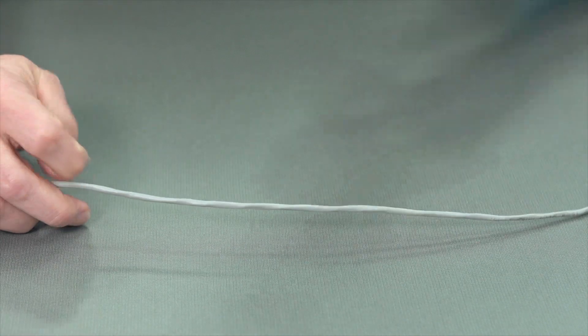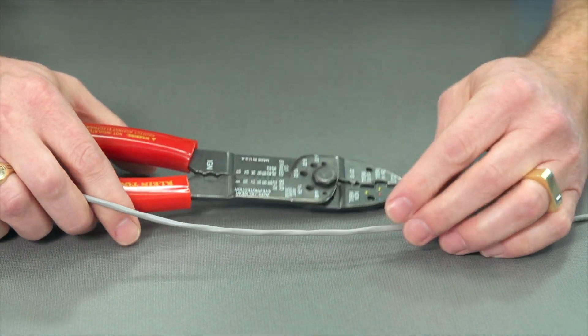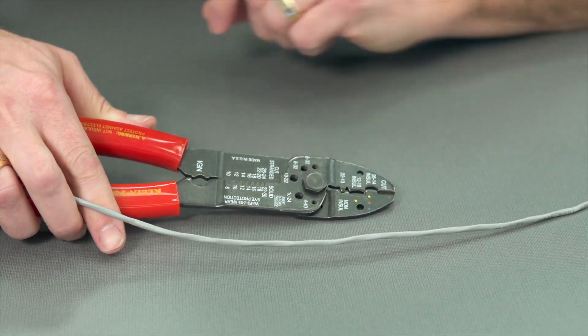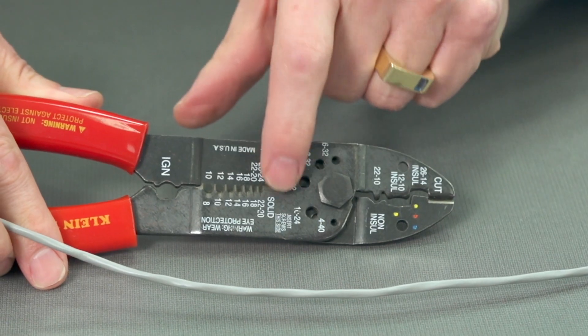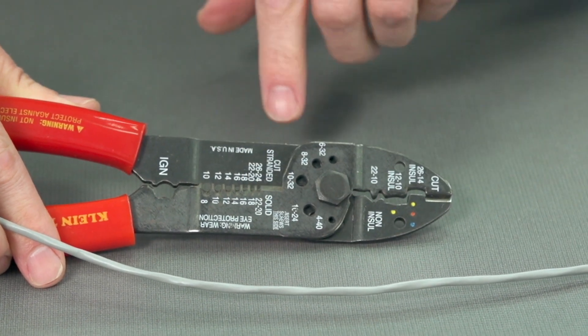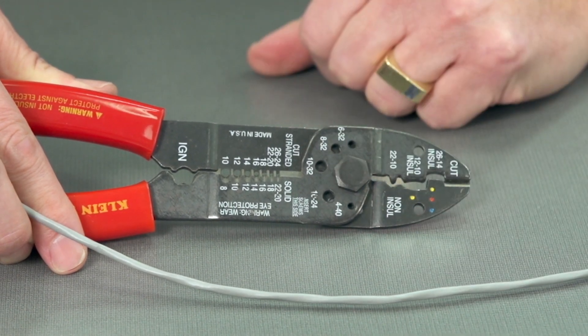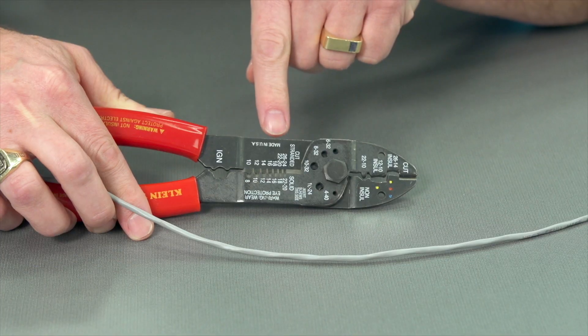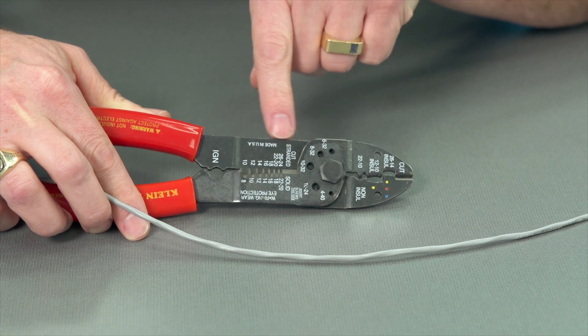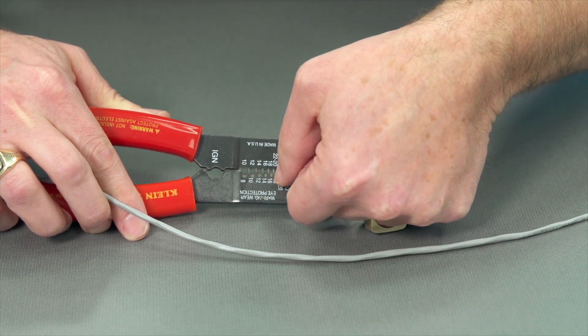So we'll get out our stripper tool and we need to strip it. Now the 22 gauge is down here and you'll see on our stripper we have a solid and a stranded. So in a moment we'll look to see if we're using solid or stranded cable. But here's our gauge. So 22 gauge is going to be stranded actually in this case, and it'll be the second slot.